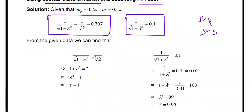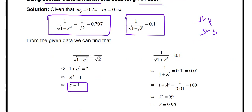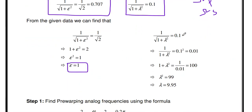Take 1/√(1+ε²) = 0.707, which we write as 1/√2. Since the numerator and denominator are the same form, taking square on both sides gives 1 + ε² = 2, so rearranging gives ε = 1. Similarly, 1/√(1+λ²) = 0.1 — taking square on both sides, taking reciprocal, and rearranging gives λ = 9.95.